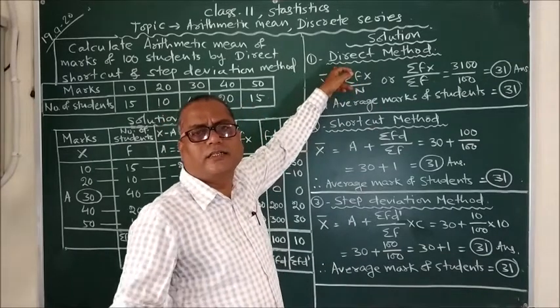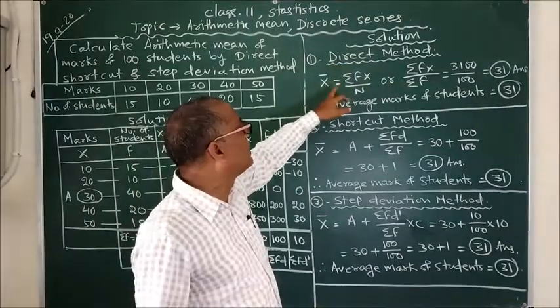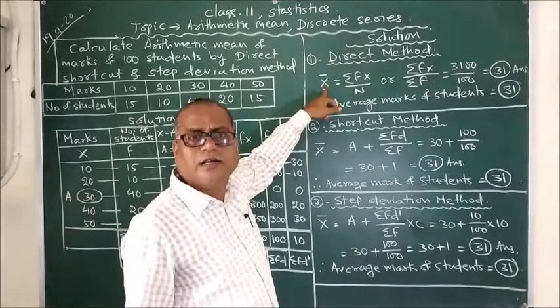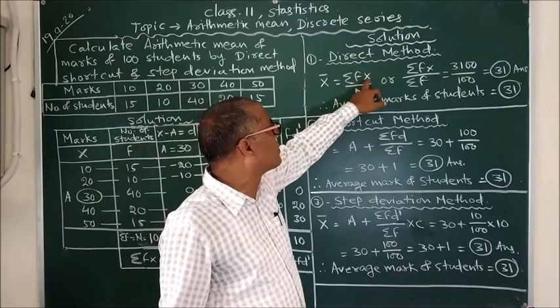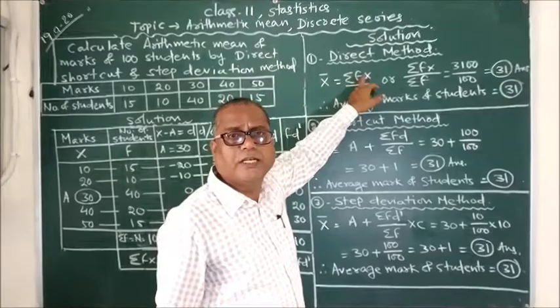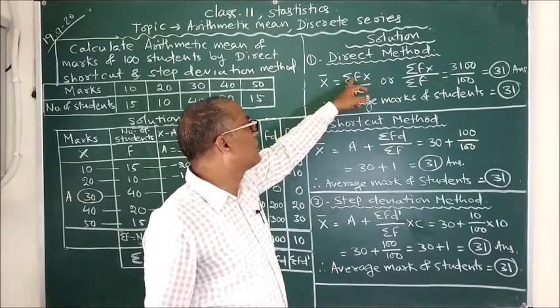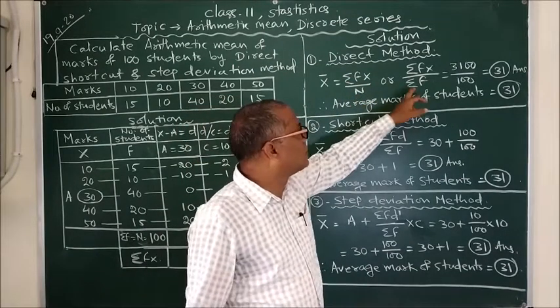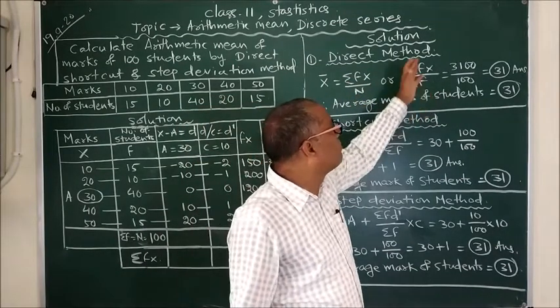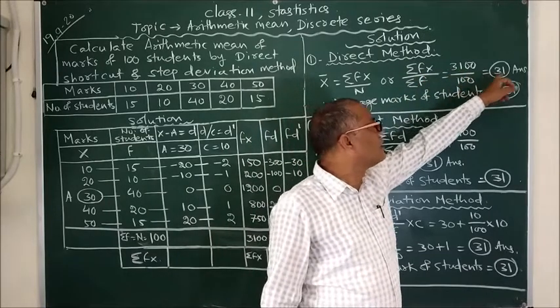The formula required for direct method to find the arithmetic mean is x bar equals summation fx divided by n or summation f. When we put the value it becomes 3100 upon 100 and the answer is 31.